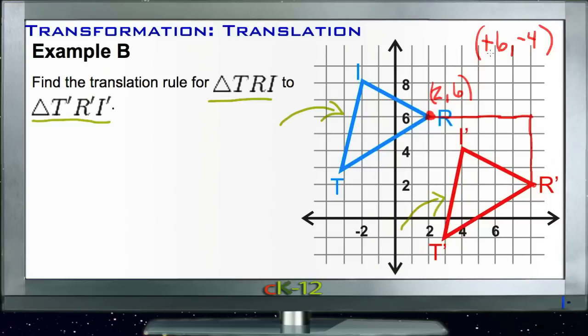Let's see if that works for the next point. Let's try I. We should have a change of positive 6 on the x-axis, so over 6: 1, 2, 3, 4, 5, 6, and then down 4 on the y-axis: 1, 2, 3, 4, which puts us solidly on that new I prime point. So that is indeed our rule of translation.